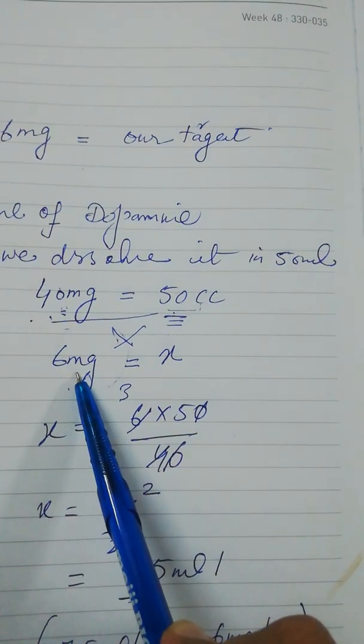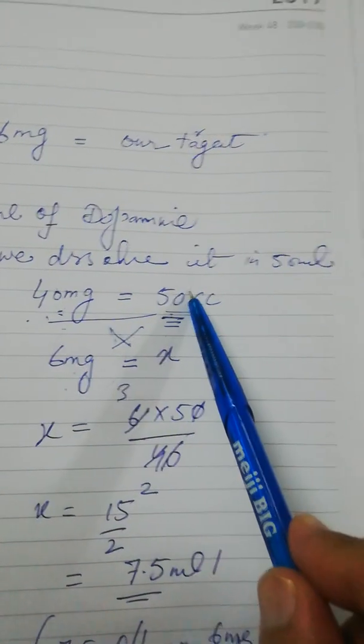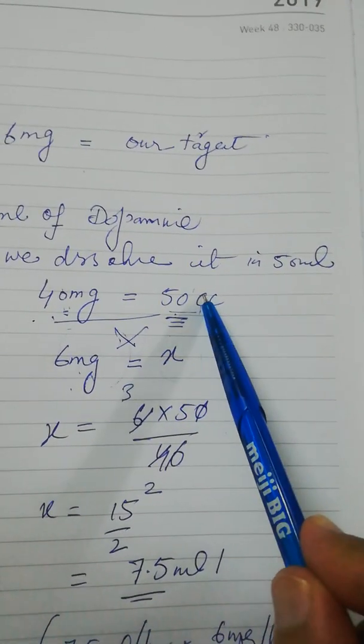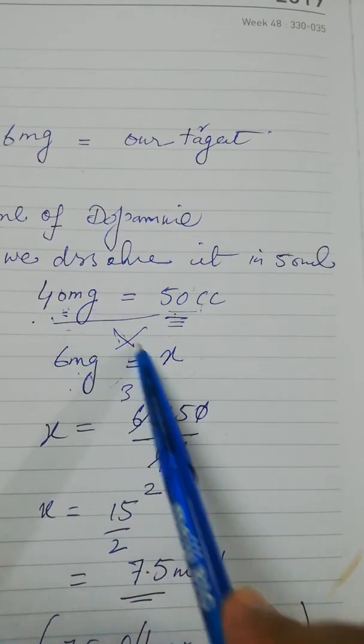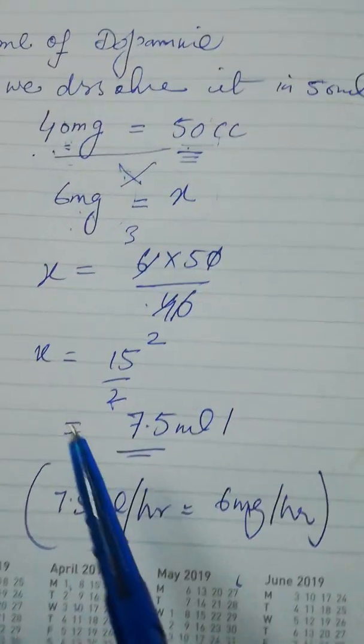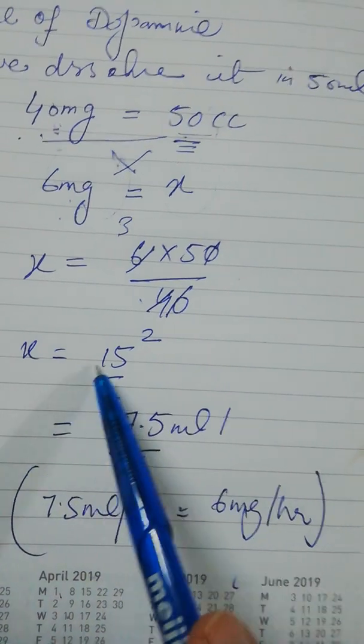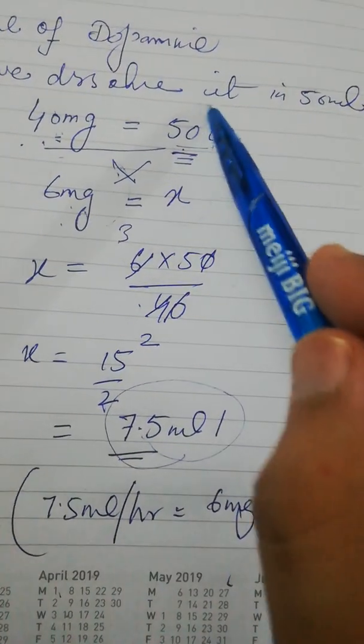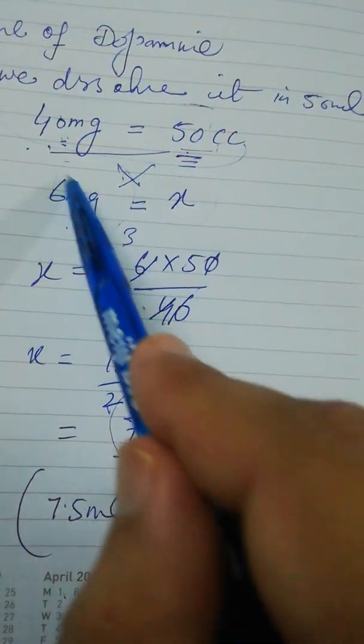Using the mathematical principle of cross multiplication, we get to know that it is actually 7.5 ml of this solution that contains 6 mg.